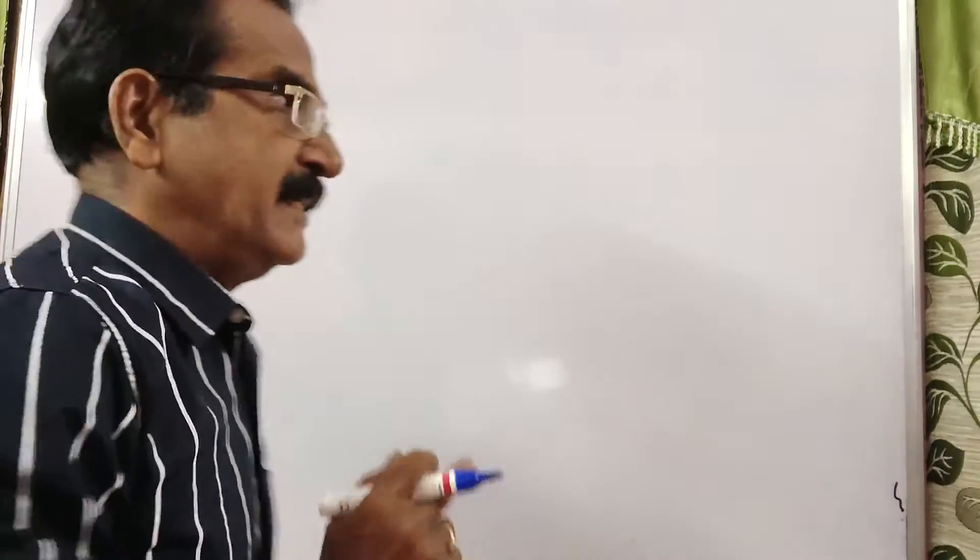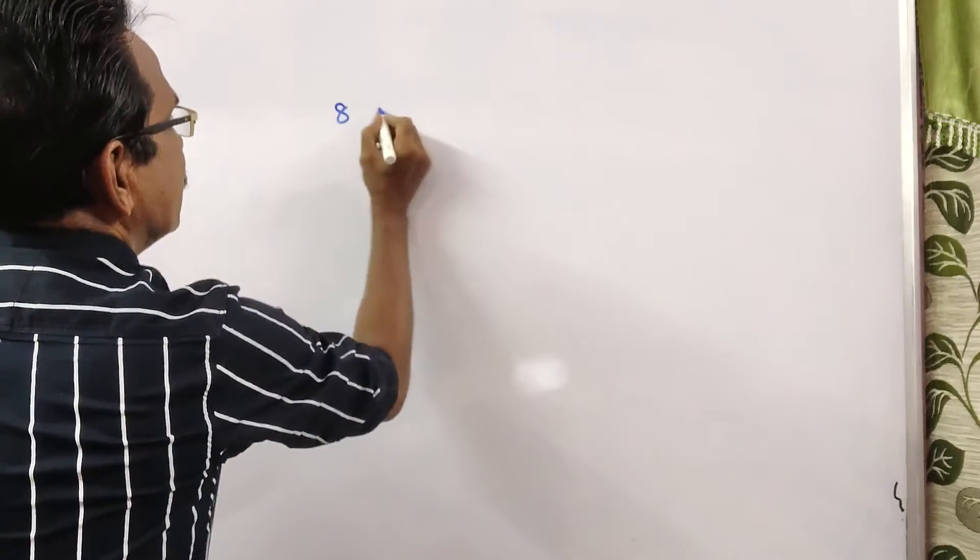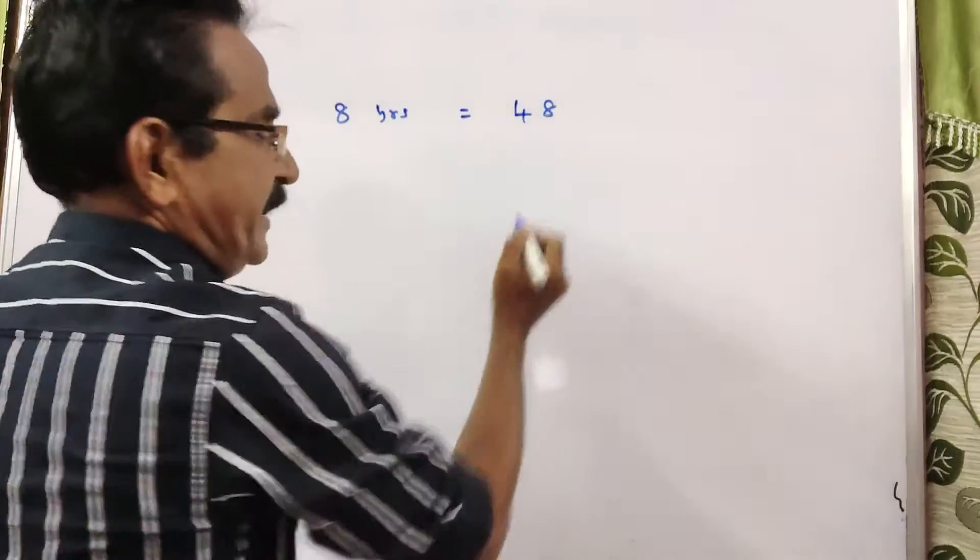So what is the total number of students? Friends, here exactly 80 years, how many students are there? 48.